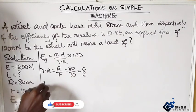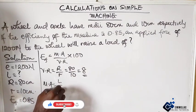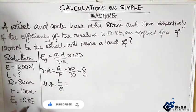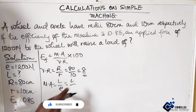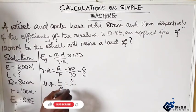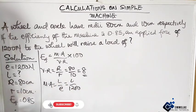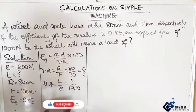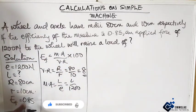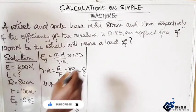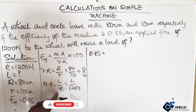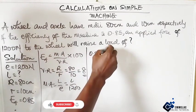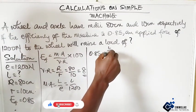Our mechanical advantage equals load over effort, and our load is what we're looking for, and our effort is 1200. Now let us implement all these parameters into this equation. Here we have 0.85, which is the efficiency. The mechanical advantage is load over 1200.